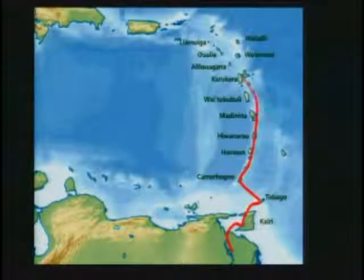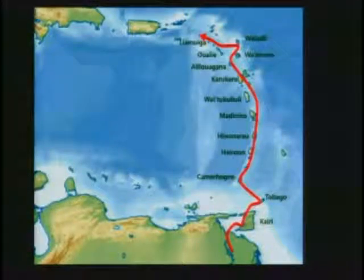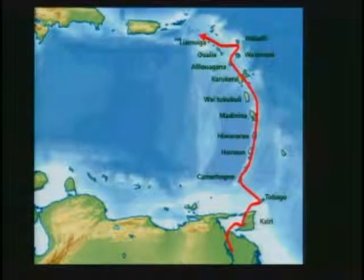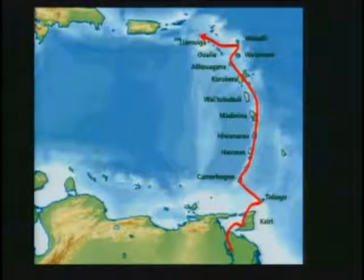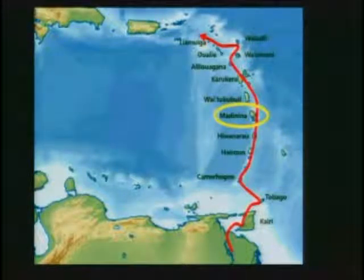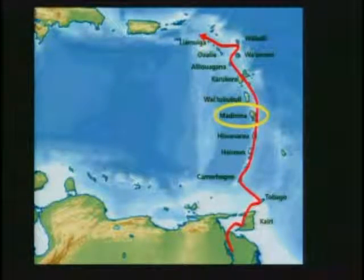This is the migration pattern of the early Caribbean people, who named the islands they inhabited based on what they experienced there. I find it very interesting that the only island that still has its original name today is Tobago — all the rest have different names. Can you guess which one of those islands is Martinique? If you asked your travel agent to book a trip to Mandanina, they'd look at you strangely. But that's what it used to be called — today it's called Martinique.